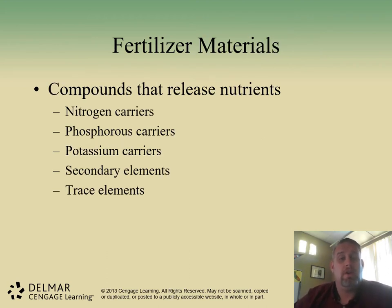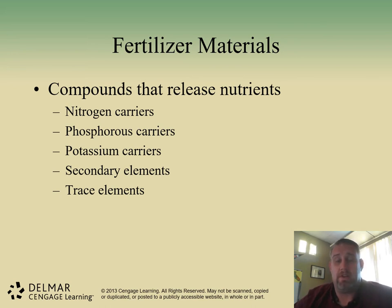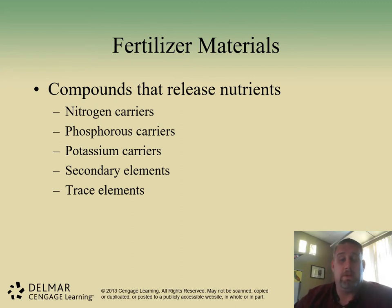There are various carriers that are important for these different nutrients. Nitrogen, phosphorus, and potassium all have specific carriers. For nitrogen, that's ammonium and nitrate. Potassium comes from a myriad of potash forms. There are phosphate ions for phosphorus. Each one of these secondary elements and the trace elements also have certain carriers that will release the nutrients that the plants can uptake.